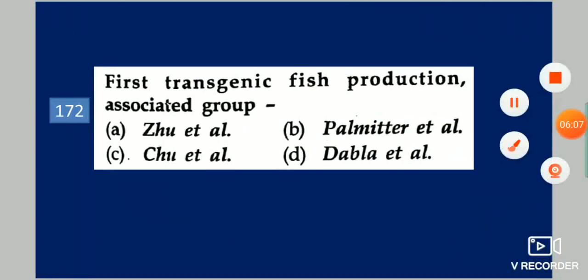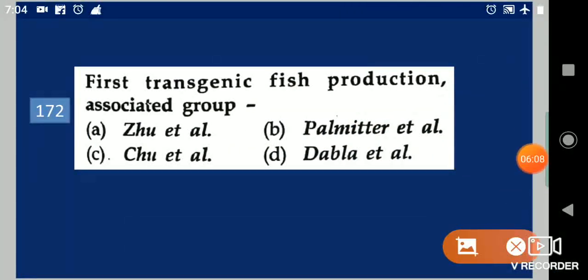Next question: First transgenic fish production associated group is dash. Your options are: Zhu et al., Palmitri et al., Chew et al., Dabla et al. Your answer is Zhu et al.